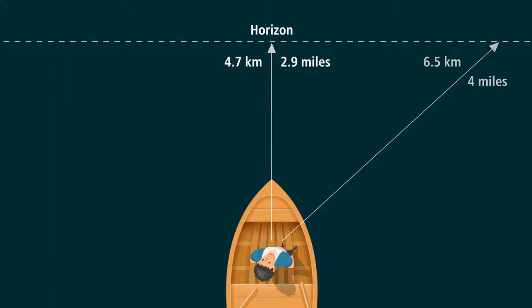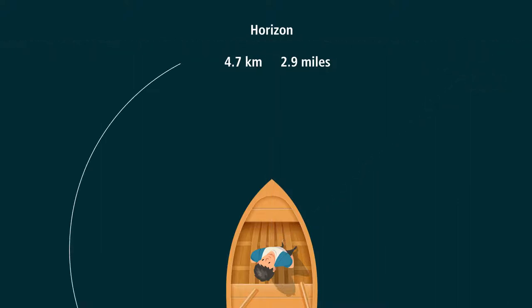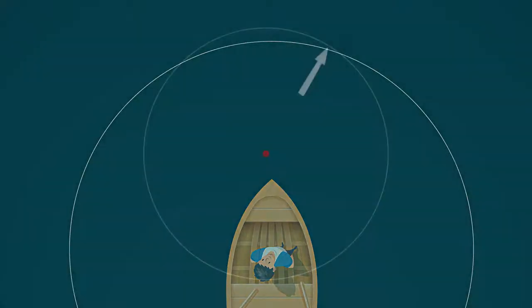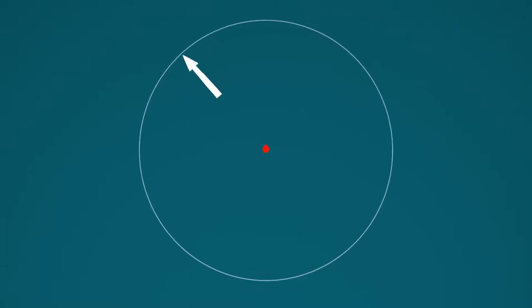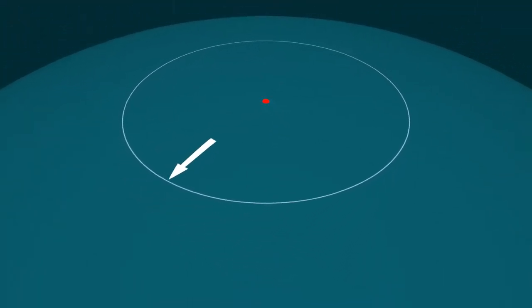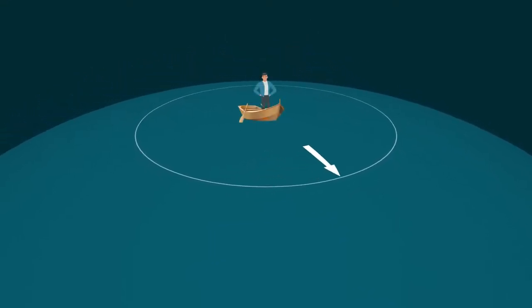Your horizon is not a straight line perpendicular to your line of sight — your horizon is a circle around you, 4.7 kilometers away, and all the ocean has fallen away by an equal amount. As you turn around, your horizon describes a circle around you, and the same amount of curve has affected your line of sight in all directions.